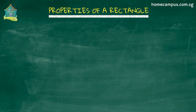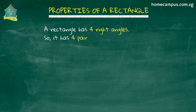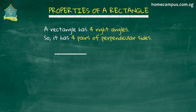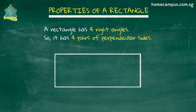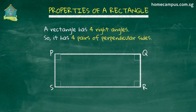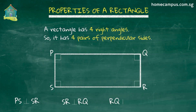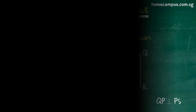The second property of a rectangle is that it has 4 right angles. This means that it has 4 pairs of perpendicular lines. So PS is perpendicular to SR, SR is perpendicular to RQ, RQ is perpendicular to QP, and QP is perpendicular to PS.